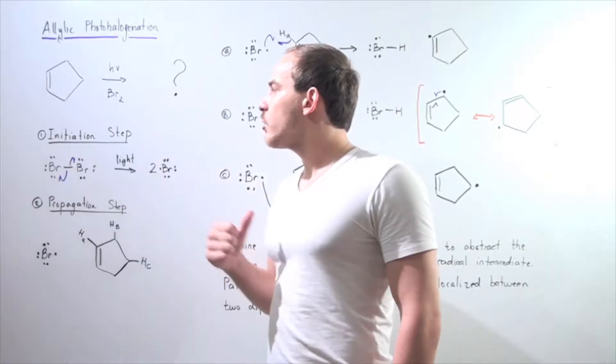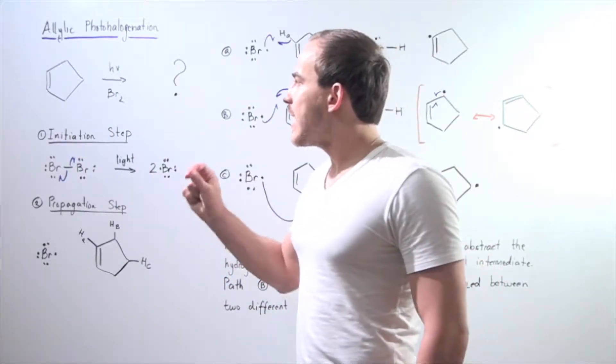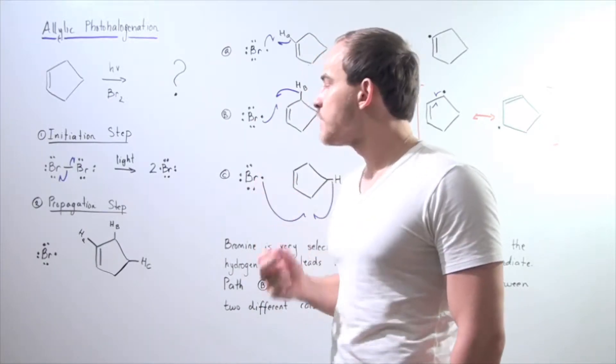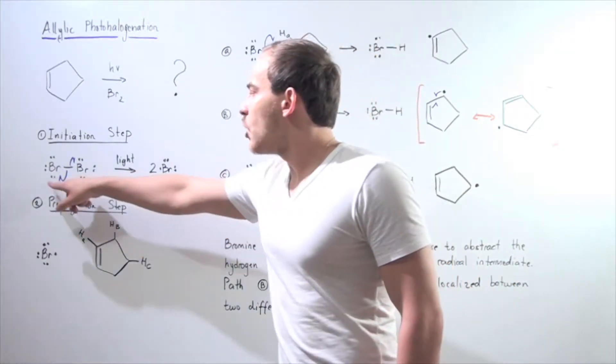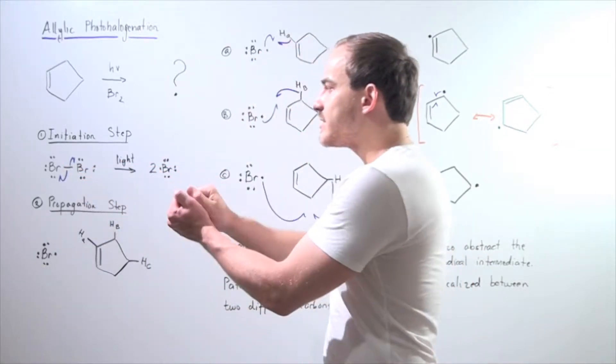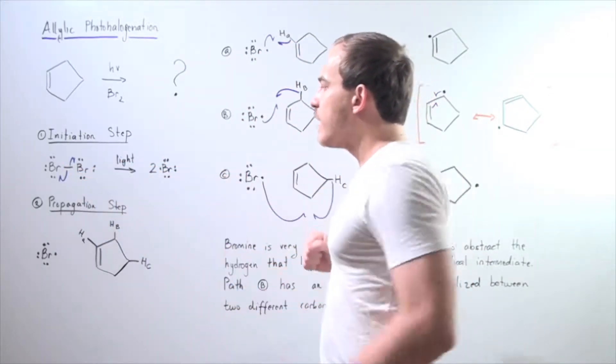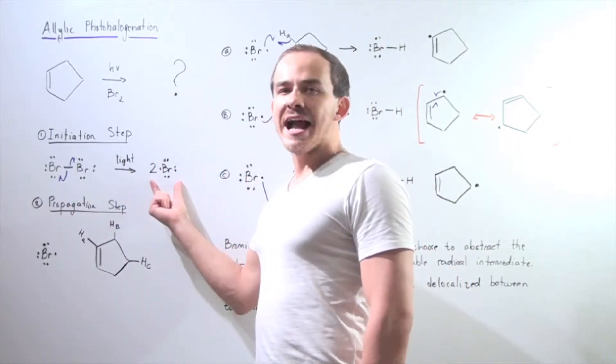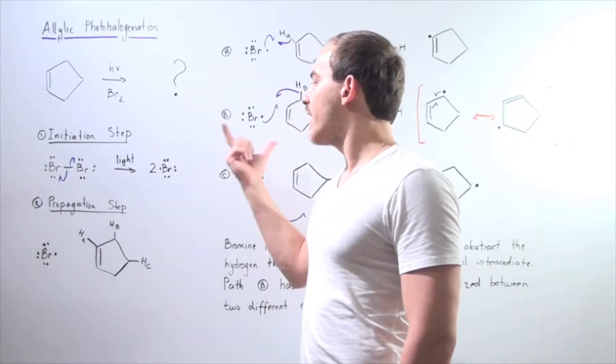So let's look at our initiation step. In our initiation step, our light, our energy source, cleaves the relatively weak bromide-bromide bond. So these two electrons separate, they dissociate, forming the following two identical chain-carrying radicals, the bromide radicals.